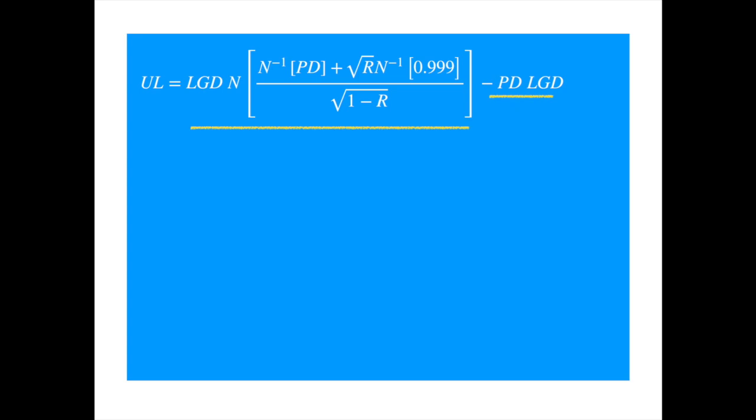We derived the quantile formula in a previous video, so despite the big words being thrown about here, our QuantPi viewers are already acquainted with the formula. This unexpected loss formula is based on a standard maturity. Portfolios to which this formula is applied in practice will have maturities longer or shorter than the standard maturity. So the UL amount is adjusted by the maturity adjustment factor.